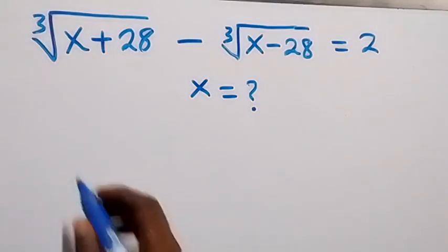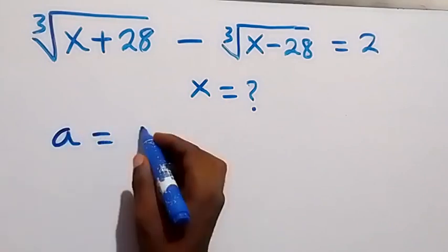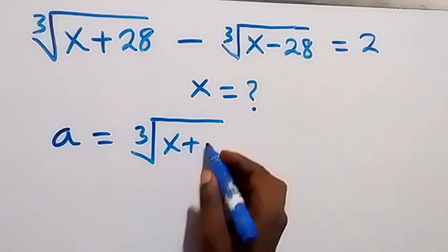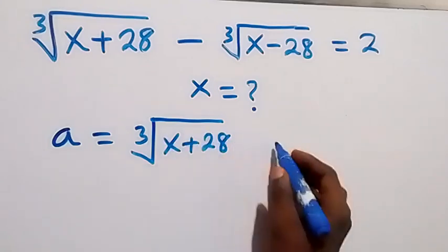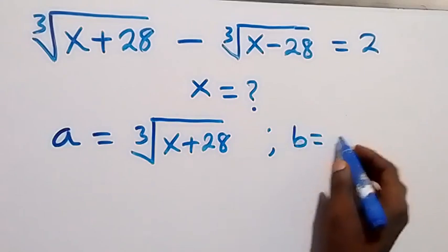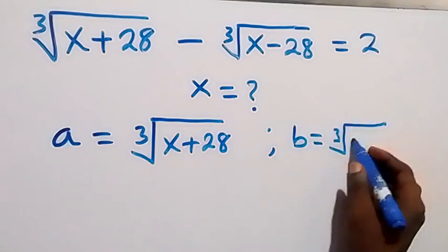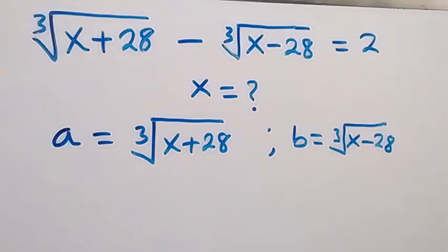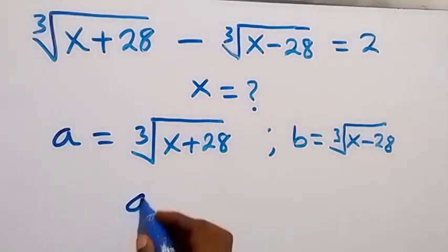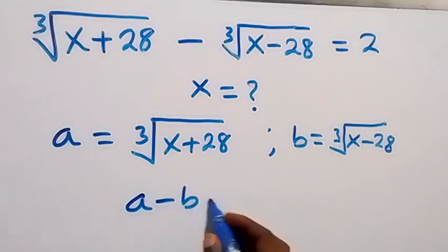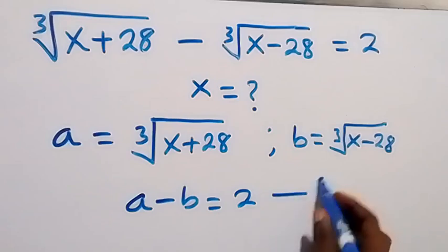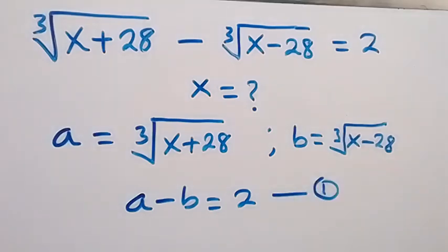Let's use a letter: let a be equal to the cube root of x plus 28, and also let b be the cube root of x minus 28. From here we can write that a minus b equals 2, and let's label this as equation 1.